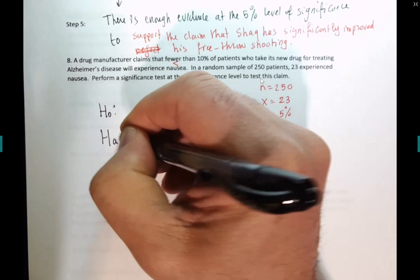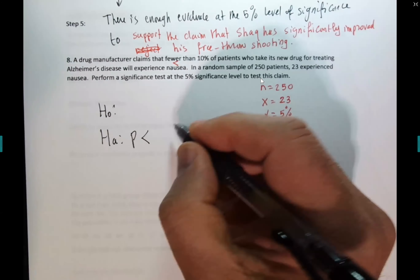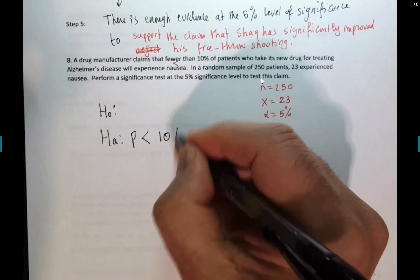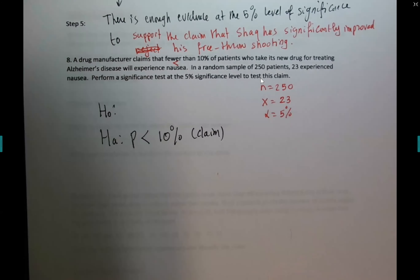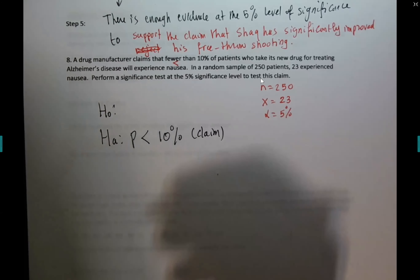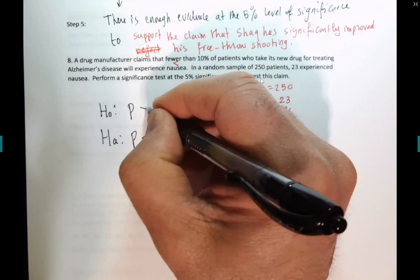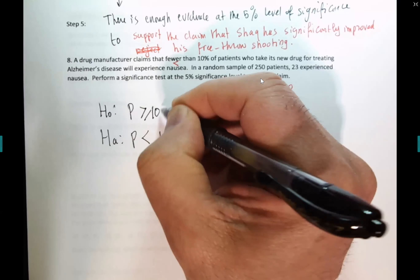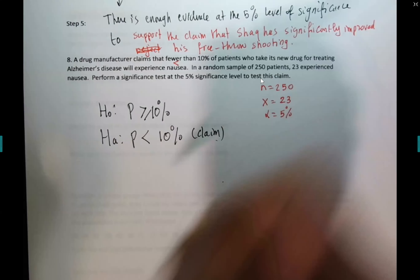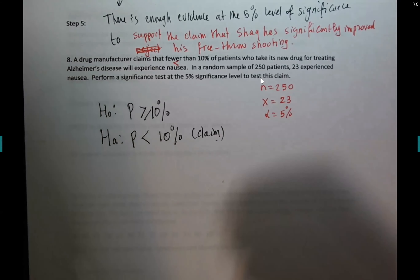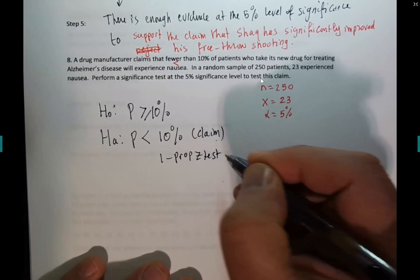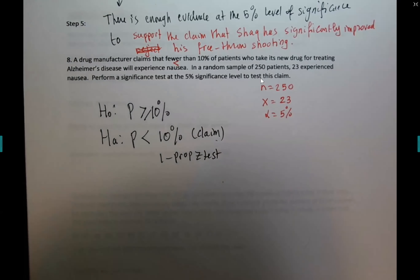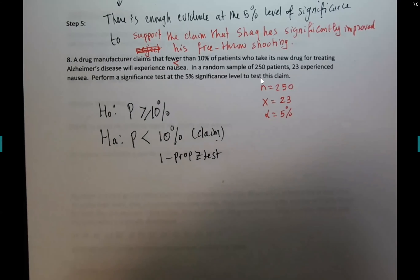Fewer means less than — so that goes into HA. HA: p < 0.10, and that's the claim. You can write 0.1 instead of 10%. The null hypothesis is p ≥ 0.10. It's a proportion z-test. He didn't ask me to check the requirements, so we assume they're met — but np > 5 and nq > 5 would work if you checked.